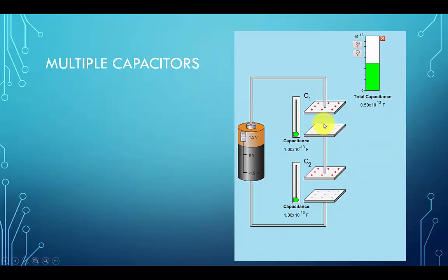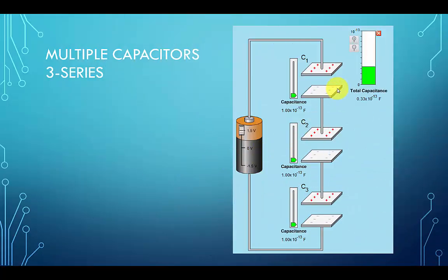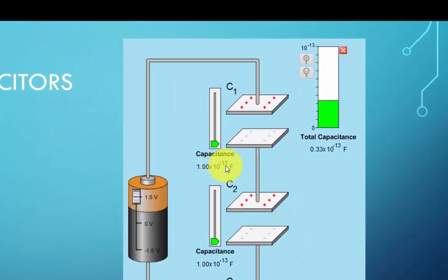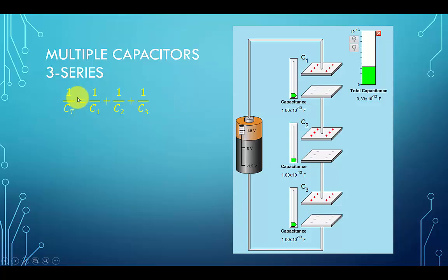Now let's look at three capacitors shown here. Again, they have the same value of 0.1 picofarads or 1 times 10 to the minus 13th farads. Using the same and similar formula, we just extend the previous formula 1 over Ct and just add another term of 1 over C3.